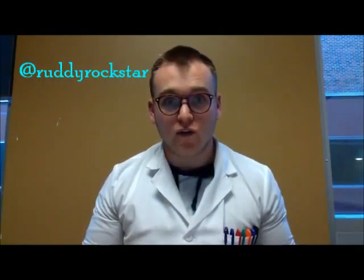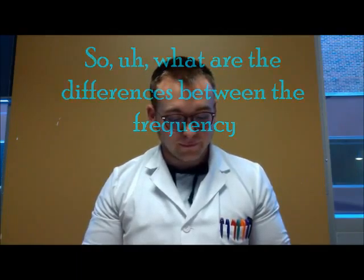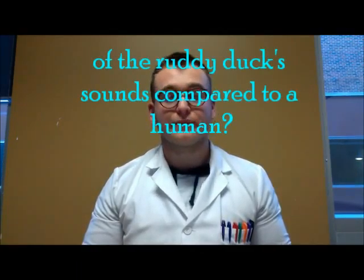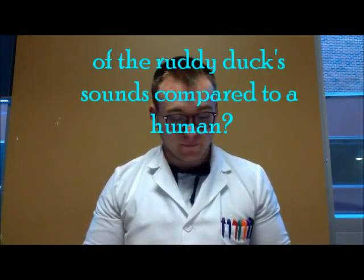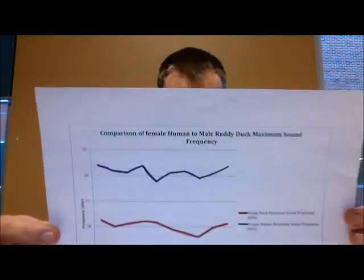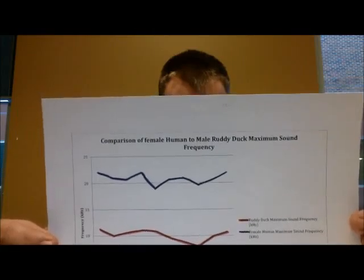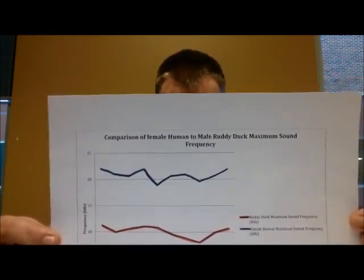We have another comment from RuddyRockstar. Let's get to that question now. What are the differences between the frequency of the ruddy duck sounds compared to a human? That's another great question. The ruddy duck produces a higher frequency minimum than humans, as seen in our graph here. If we look at the maximum frequency produced, as seen in this graph, the duck produces a lower frequency maximum than humans.